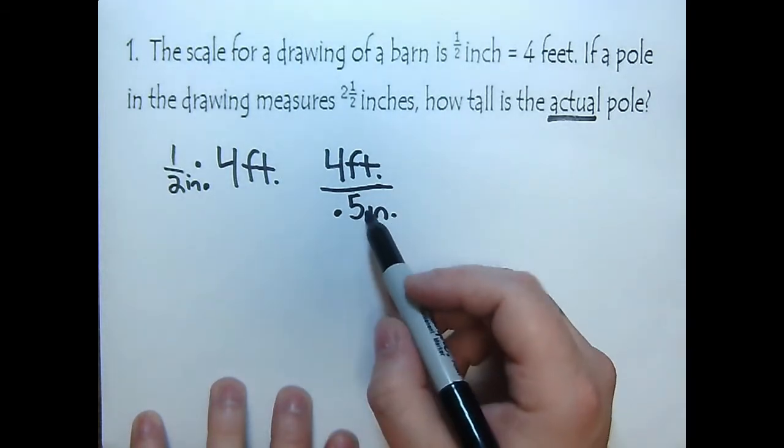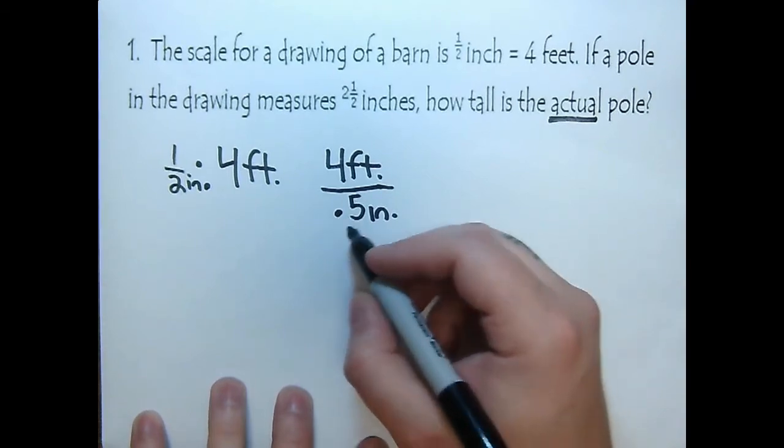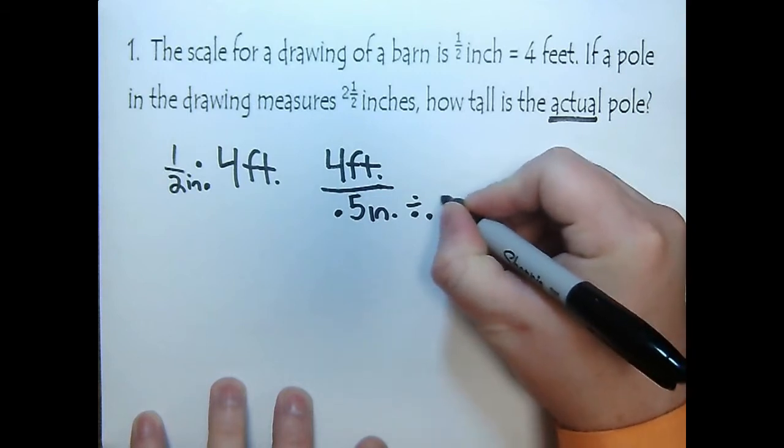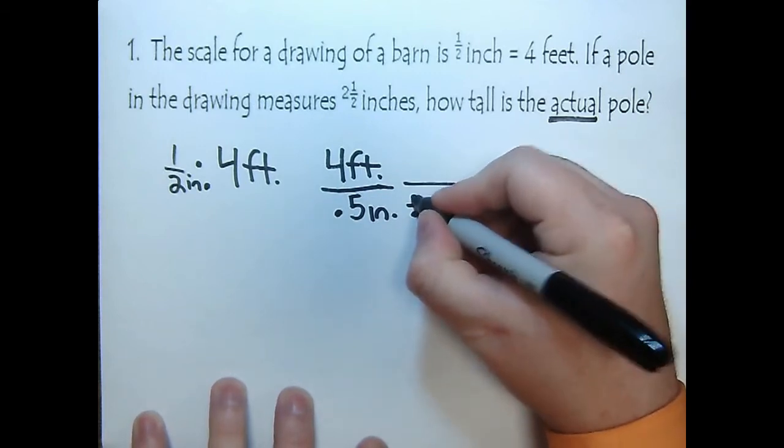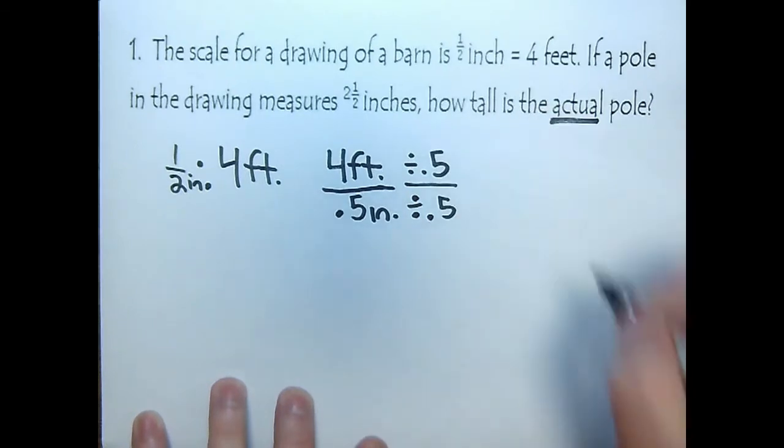In order to get one in the denominator, we just need to divide by what's in the denominator. So if I have 0.5 in the denominator, I need to divide by 0.5. But whatever I do on the bottom, I need to do on the top. So up here, I need to also divide by 0.5.